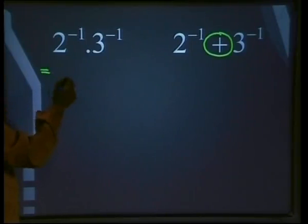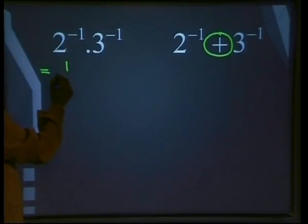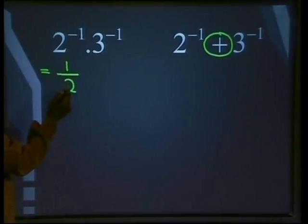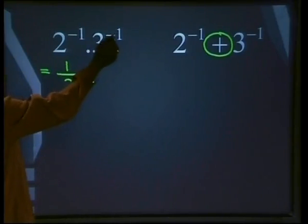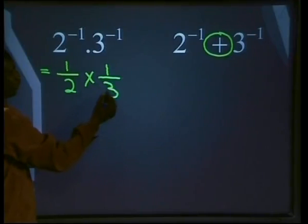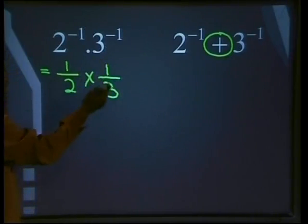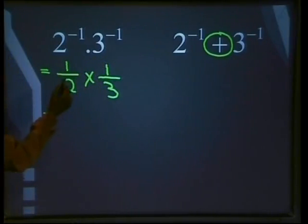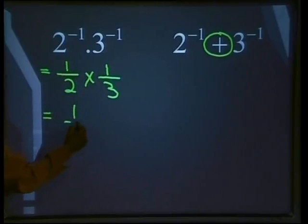Two to the power minus one can be written as one over two to the positive one, which is the same as one over two. Multiplied by three to the power minus one, which can also be written as one over three to the power positive one, which is the same as one over three. Since we are multiplying, we multiply numerator by numerator — which gives us one — and denominator by denominator: two times three, which gives us one sixth.